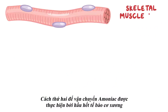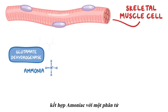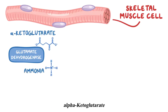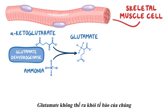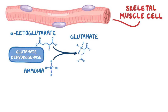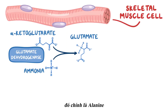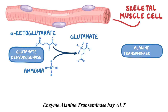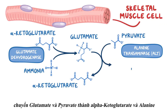The second way to move ammonia around is done mostly by skeletal muscle cells. In skeletal muscle cells, the enzyme glutamate dehydrogenase incorporates ammonia into the molecule alpha-ketoglutarate, and it turns into glutamate. But unlike glutamine, glutamate can't leave the cell on its own. It needs to somehow give its ammonia to an amino acid that can leave the cell, and the one it chooses is alanine. So the enzyme alanine transaminase, or ALT, converts glutamate and pyruvate into alpha-ketoglutarate and alanine.